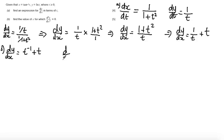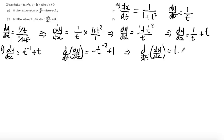Now if I differentiate dy by dx with respect to t, what I get left with is minus t to the minus 2 plus 1, which I'm just going to tidy up and rewrite. So that's dy by dx with respect to t, which is equal to 1 minus 1 over t squared.